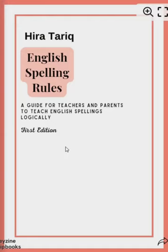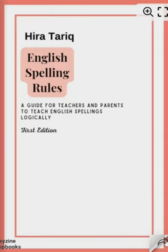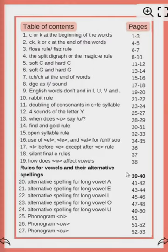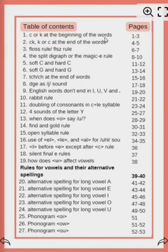Hey there! As many of you are asking what is inside my English spellings rule book, here you are. This is the table of contents. You will find the CK rule at the beginning of the words, CK, C and K.